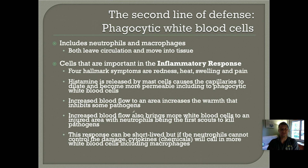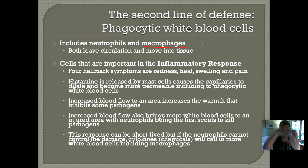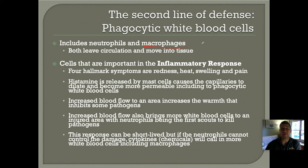The second line of defense consists of the phagocytic white blood cells, which include two types of cells called neutrophils and macrophages. Macrophages are the white blood cells that can actually leave your circulation and move into your tissues, where they find bacteria, viruses, and other things that don't belong in your body and literally digest them — they engulf them and break them down. When you get infected by a virus or bacteria, the first thing that happens is what we call the inflammatory response.